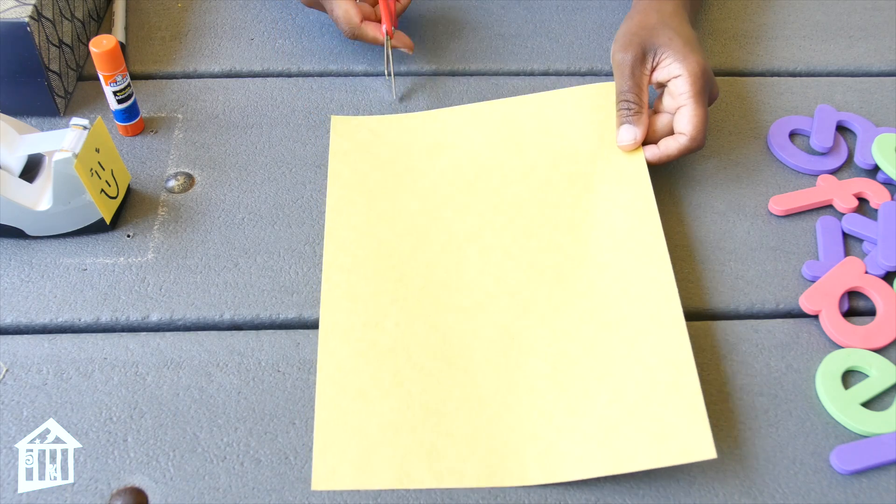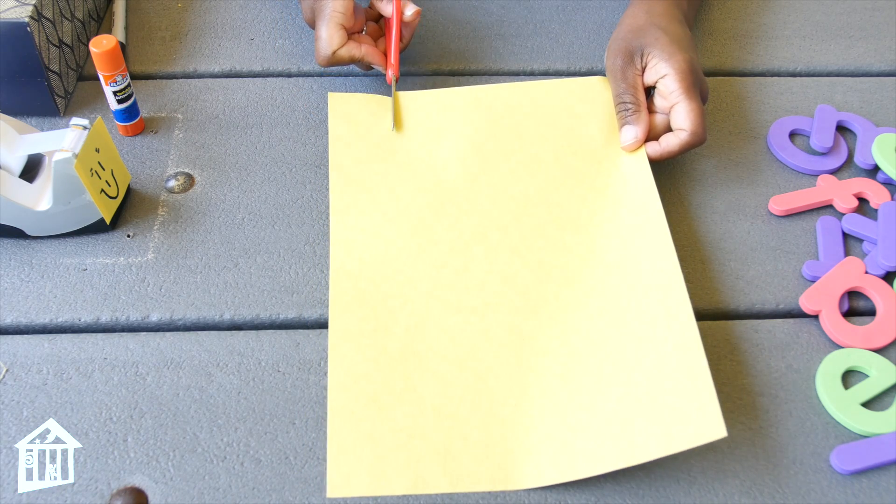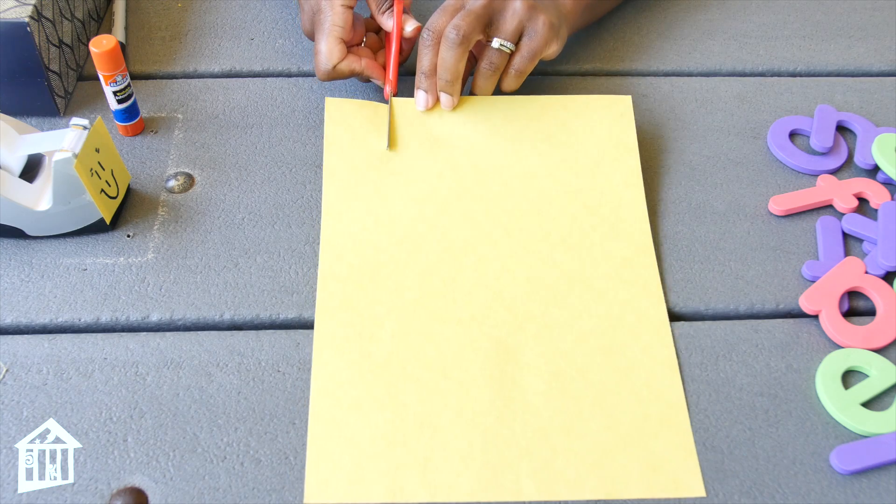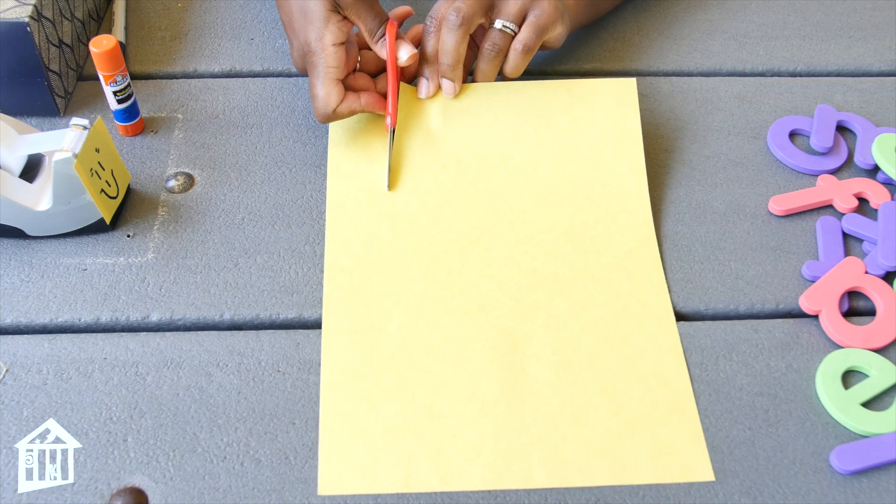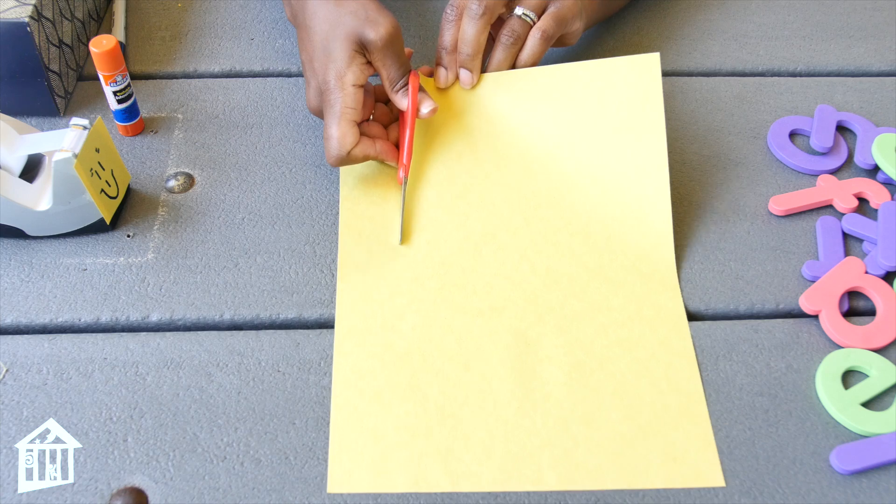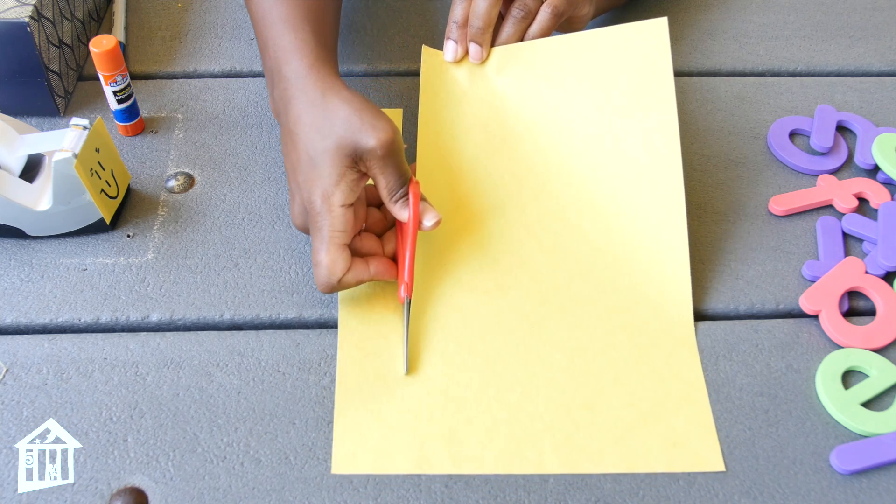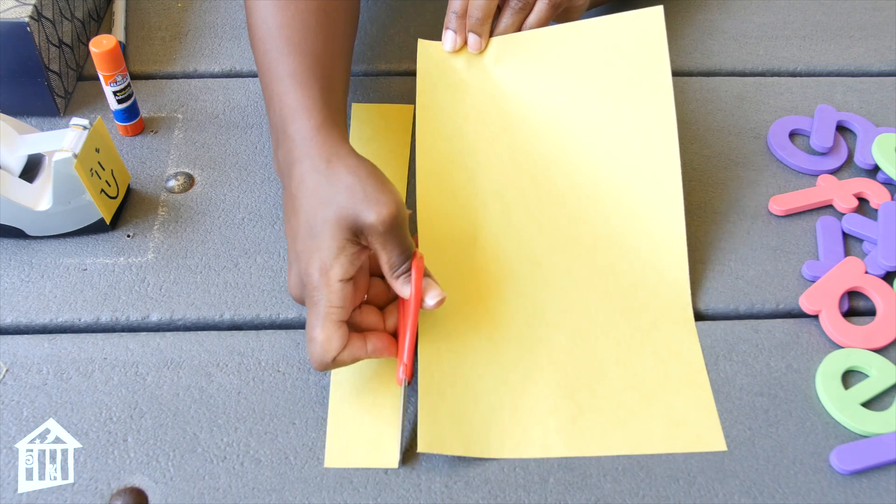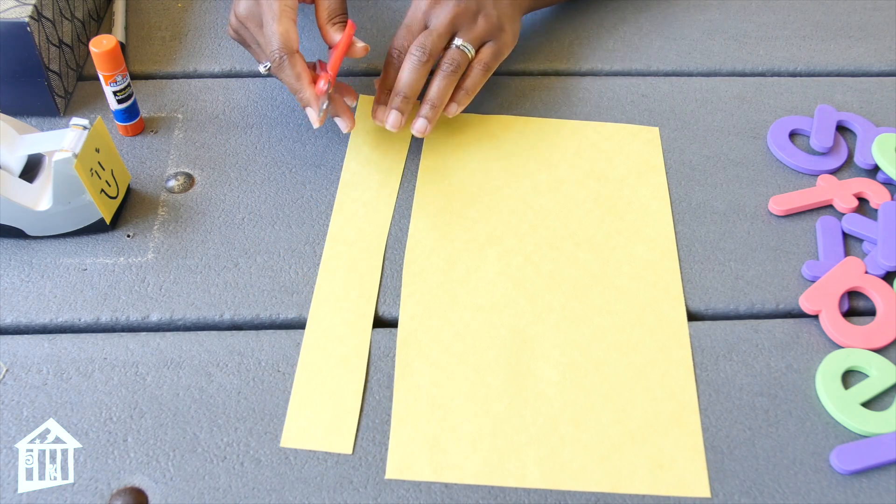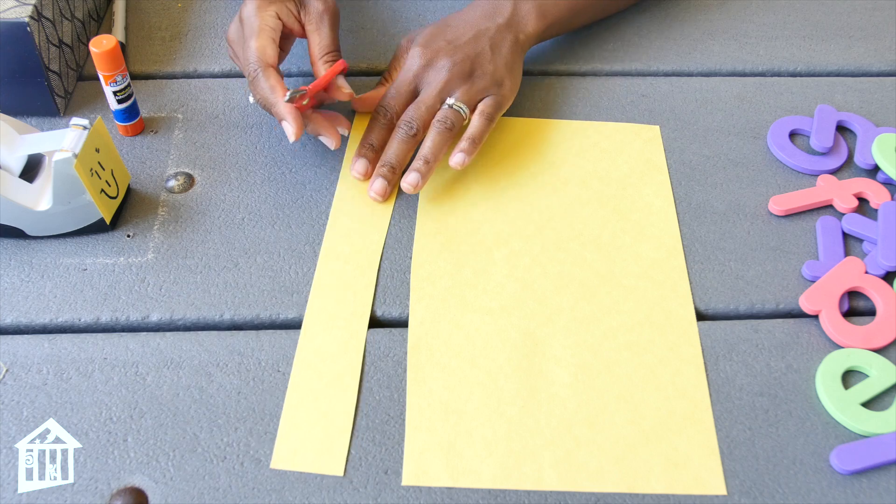First what we're going to do is cut a strip of the construction paper about an inch, maybe an inch and a half. And if it ends up being too wide for the piece of the box that you select, then you can always cut it to fit. So this is going to be for our strip. Not too straight, but that's okay.